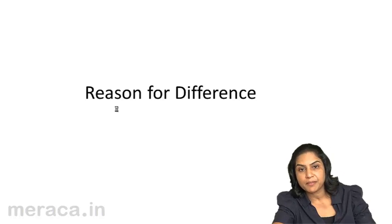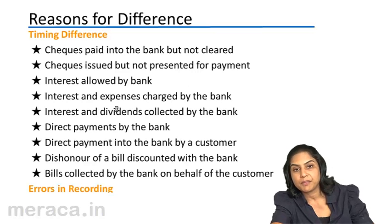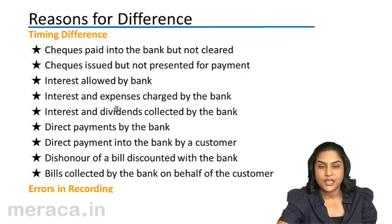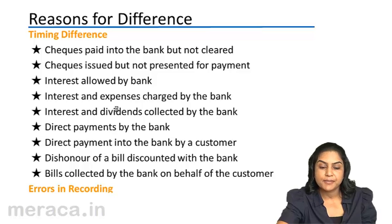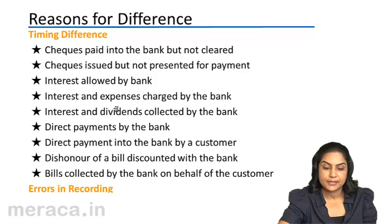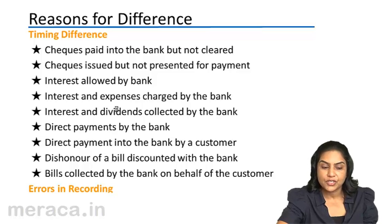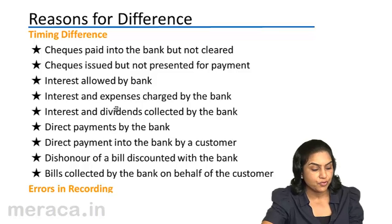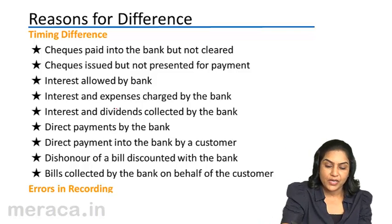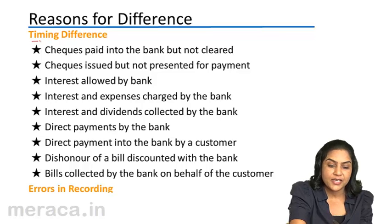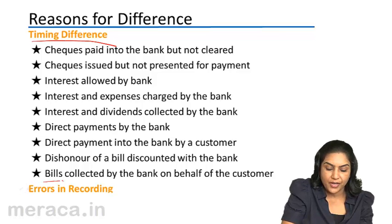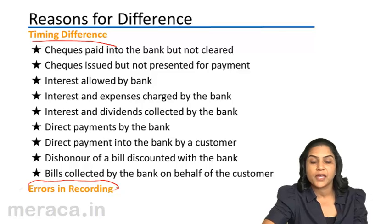The reasons for the difference between the balance shown in the cashbook and that shown in the passbook are of two types: one is timing differences and the other is errors in recording. Errors could be in either the passbook or the cashbook.